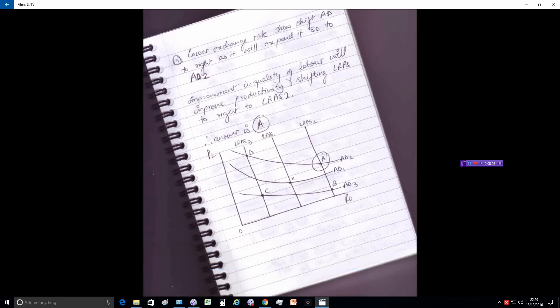In question 19, the lower exchange rate will show a shift of AD to the right as it will expand. Why will it expand? Because lower exchange rates will increase our exports, which makes the British goods cheaper, and will decrease the imports because we are paying a higher price for imports.